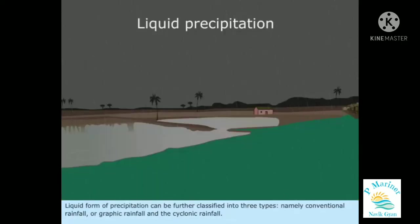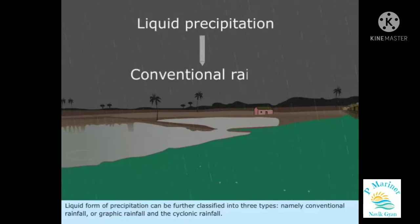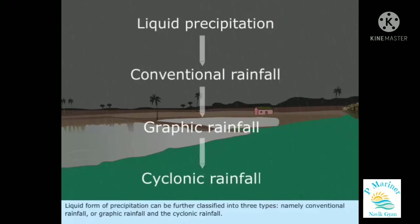Liquid form of precipitation can be further classified into three types: namely conventional rainfall, orographic rainfall, and cyclonic rainfall.